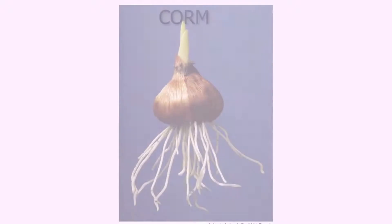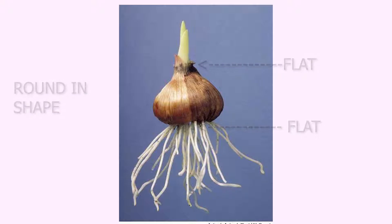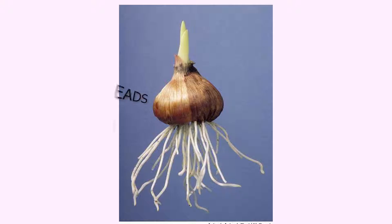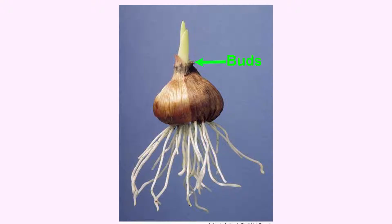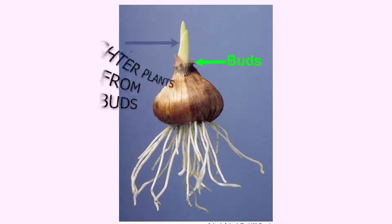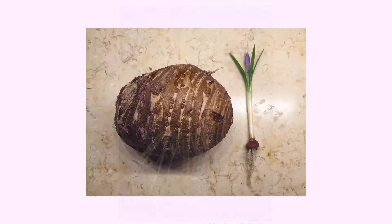Corm is an underground stem that is round in shape and flat at the top and bottom. It is a condensed form of rhizome, meaning it spreads less compared to rhizome. It bears one or more buds in the axils of scale leaves. Daughter plants arise from these buds. Colocasia is an example of corm.